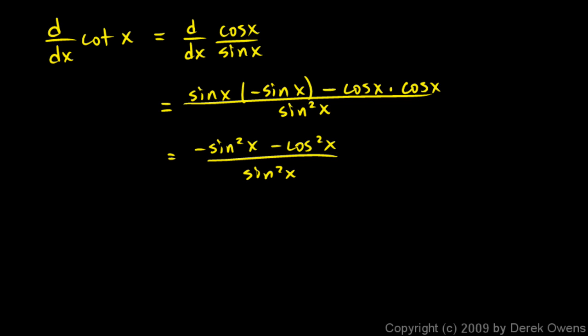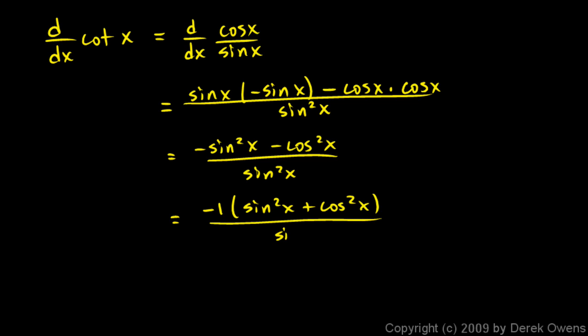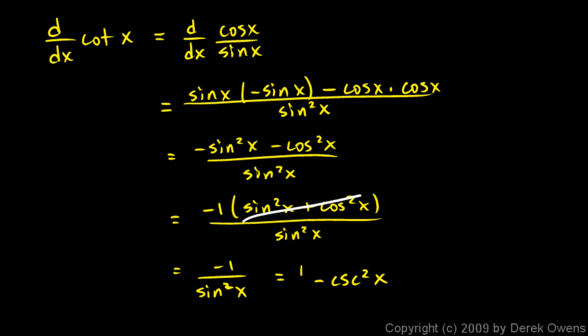You can see that the numerator is negative 1 times the quantity. If you factor out the negative 1, you get negative 1 times sine squared x plus cosine squared x over sine squared x. Since sine squared x plus cosine squared x equals 1, we end up with negative 1 over sine squared x. And since 1 over sine squared is cosecant squared, this is negative cosecant squared x. The derivative of the cotangent function is negative cosecant squared x.